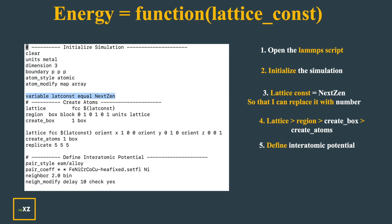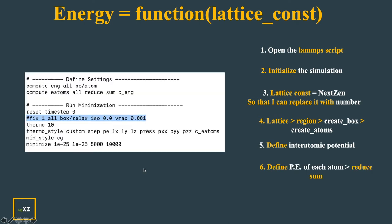Now I define the interatomic potential which is an EAM file and I use it for pure nickel. I define the settings for the potential energy of atom and I use EAM atoms and reduce all the energy of the atoms using sum to one value using reduce sum and that is the potential energy of the whole system.